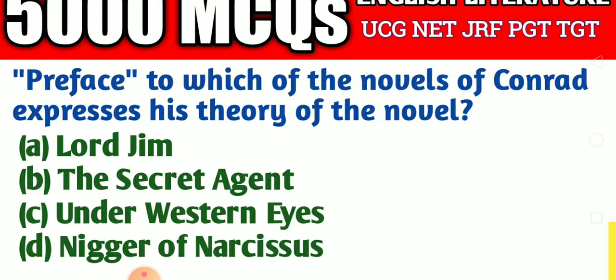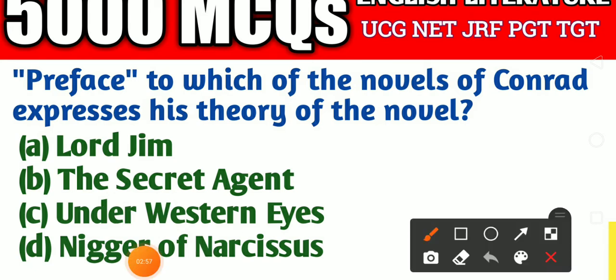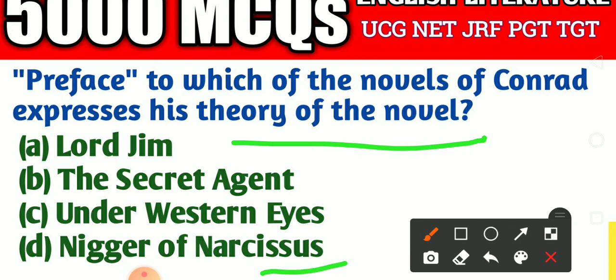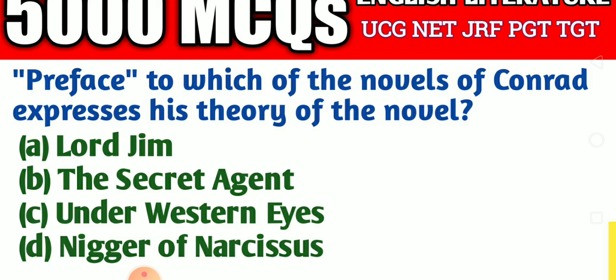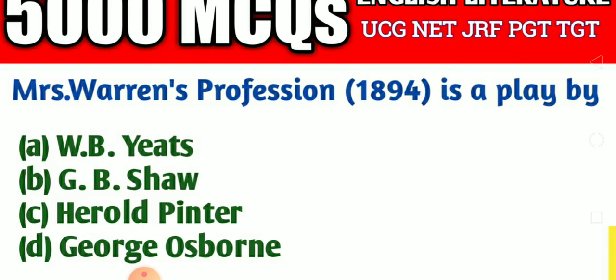The next question is: the preface to which of the following novels of Conrad expresses his theory of the novel? Option A: Lord Jim, Option B: The Secret Agent, Option C: Under Western Eyes, Option D: Nigger of the Narcissus. The right answer is Option D — Nigger of the Narcissus.